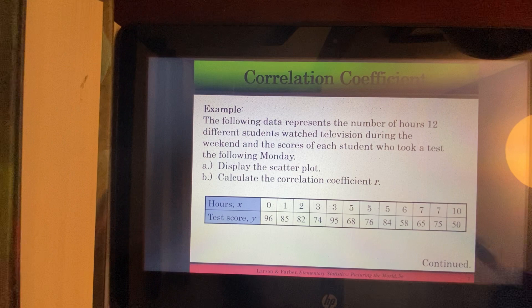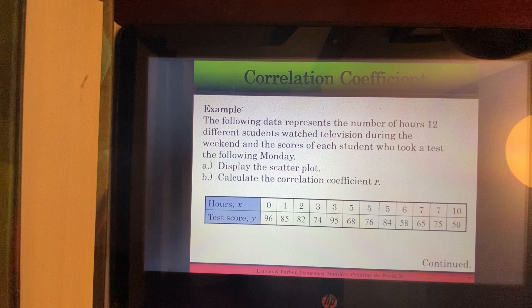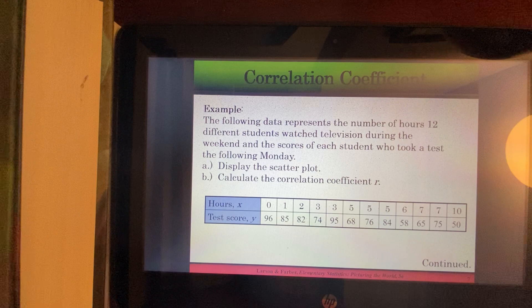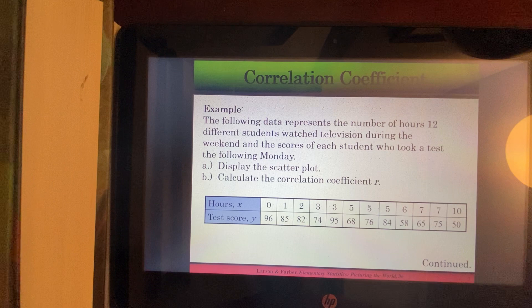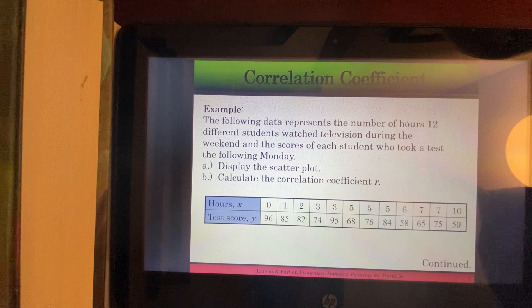For example, this student spent zero hours watching television over the weekend. And on Monday, that student earned a 96 on their test. This student spent five hours watching TV over the weekend. And it looks like they earned a 76 on the test. The student spent 10 hours watching TV and earned a 50.